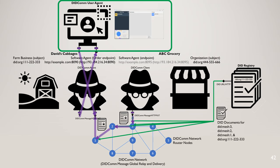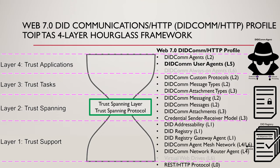For the TOIPE Hourglass framework, DIDCOM user agents are a simple addition at layer four — Trust Applications. It's a specialization of the DIDCOM agents from layer two of the Web 7.0 model, highlighted in bold.